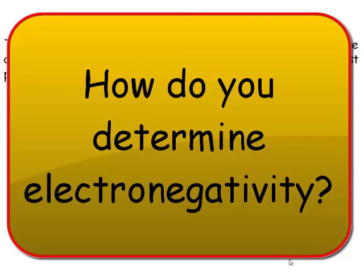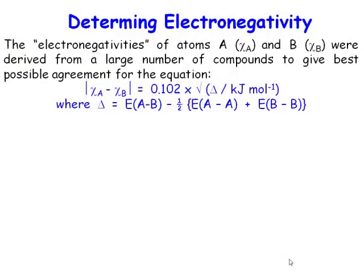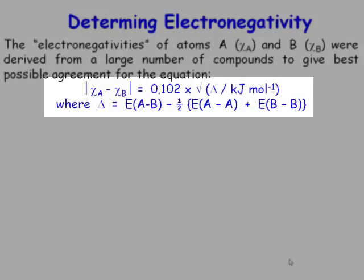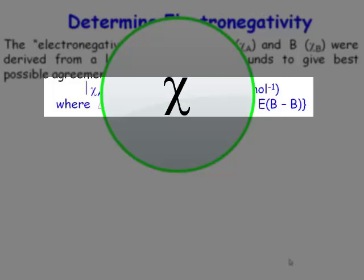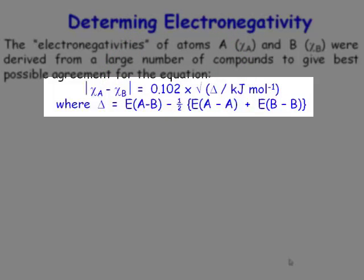Now, how do you determine electronegativity? The formula that you will need is the one that I've presented here. First of all, electronegativity is given the symbol of the Greek capital letter chi. Chi A is electronegativity of atom A. Chi B is electronegativity of atom B. So we're taking the modulus of this sum here. The modulus of the difference between the two electronegativities is equal to a factor here.